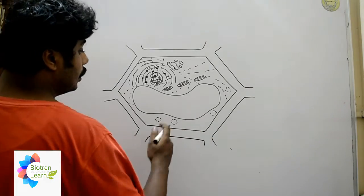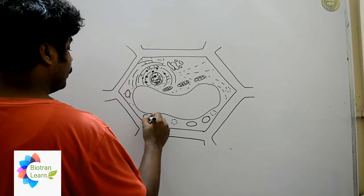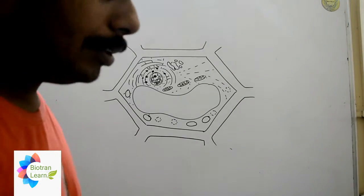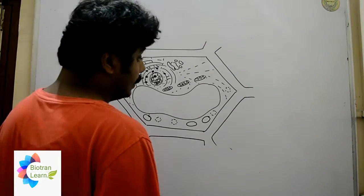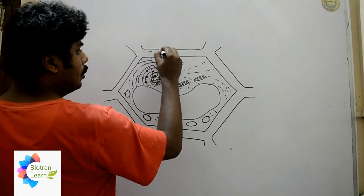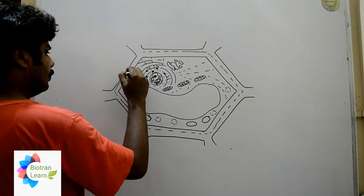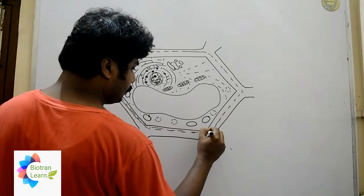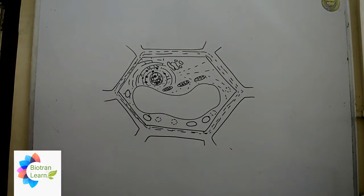We will get a dual membrane structure known as plastids — these are like the kitchen of a plant cell. Now we can divide the cell wall into a triple layer: a primary, secondary, and tertiary layer.